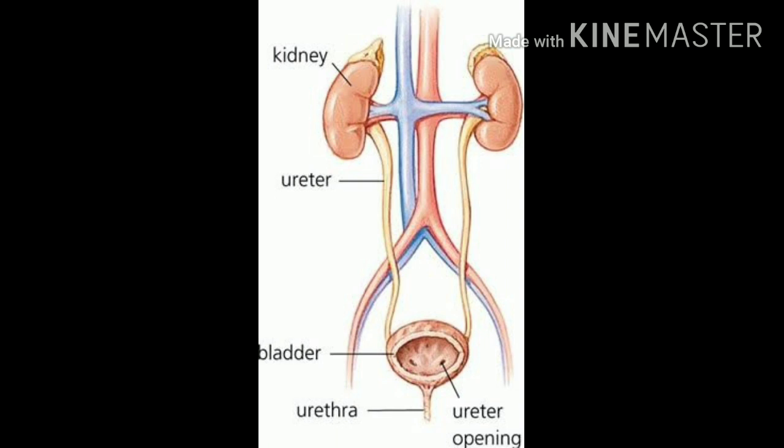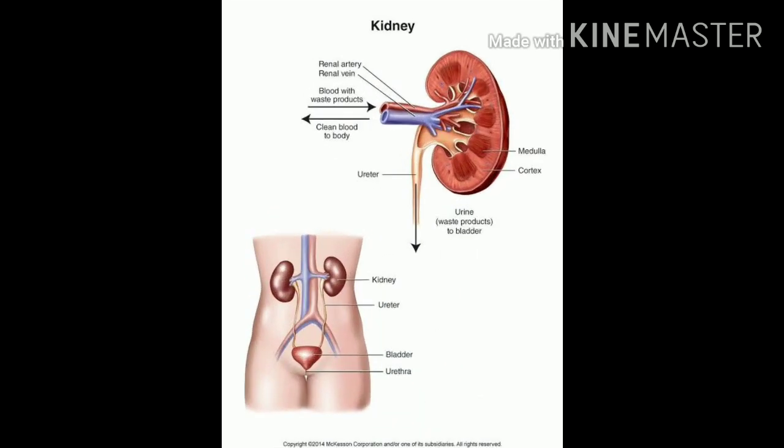This actually forms the excretory system, we also call it the urinary system. The excretory system of humans consists of a pair of kidneys, a pair of ureters, a muscular urinary bladder and a urethra with urinary opening. Each kidney has a number of excretory units or filtering units called nephrons.